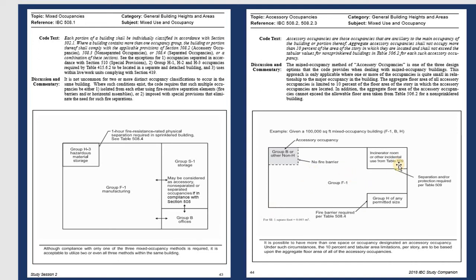Another example: Group B for business, Group F for manufacturing, and Group H with a permit-limited size — referencing Table 509. The Group H area, because it stores combustible material, requires a one-hour fire-rated wall. Between Group B and Group F, you may not need a fire wall, but because of the hazardous materials in Group H, that separating wall must be one hour fire-rated.